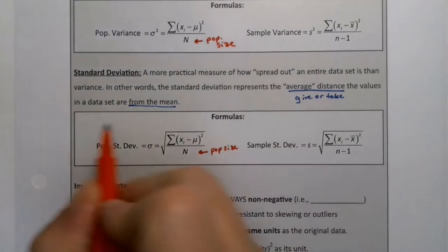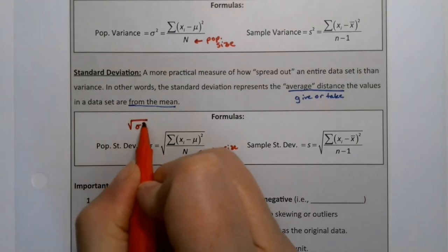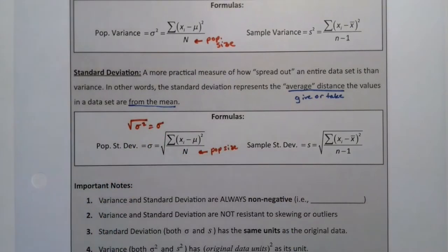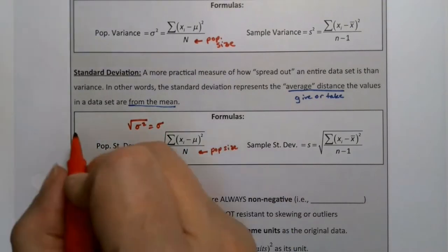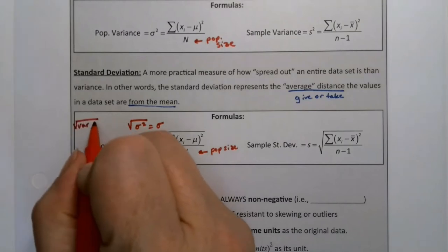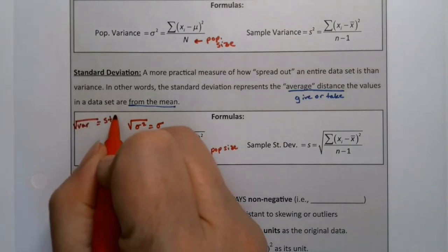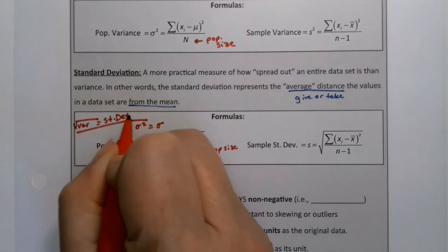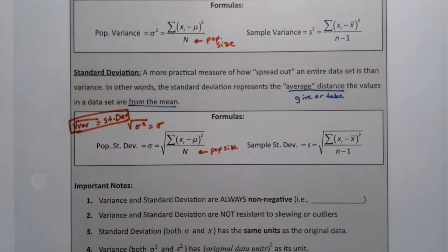You take the square root of the variance and you will have the standard deviation. And we note that the square root of sigma squared is sigma. You take the square root of variance and you will have standard deviation. We've mentioned that before, but just another recap.